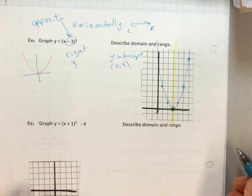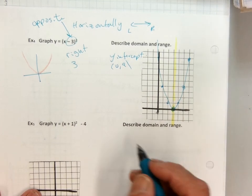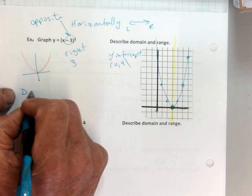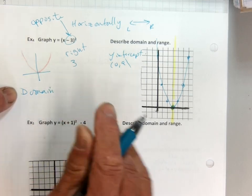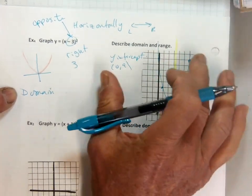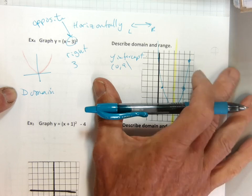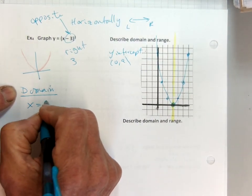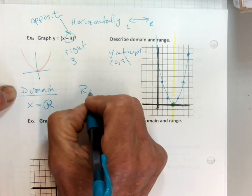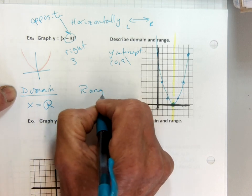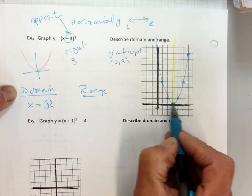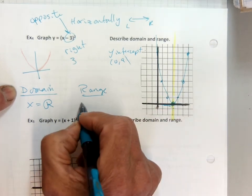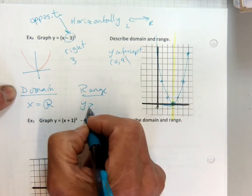Domain and range are going to be the same as before. Domain is going to be all real numbers, because it's forever wide and you can plug anything you want in. But the range starts at a height of zero and goes up. So the range is y is greater than or equal to 0.